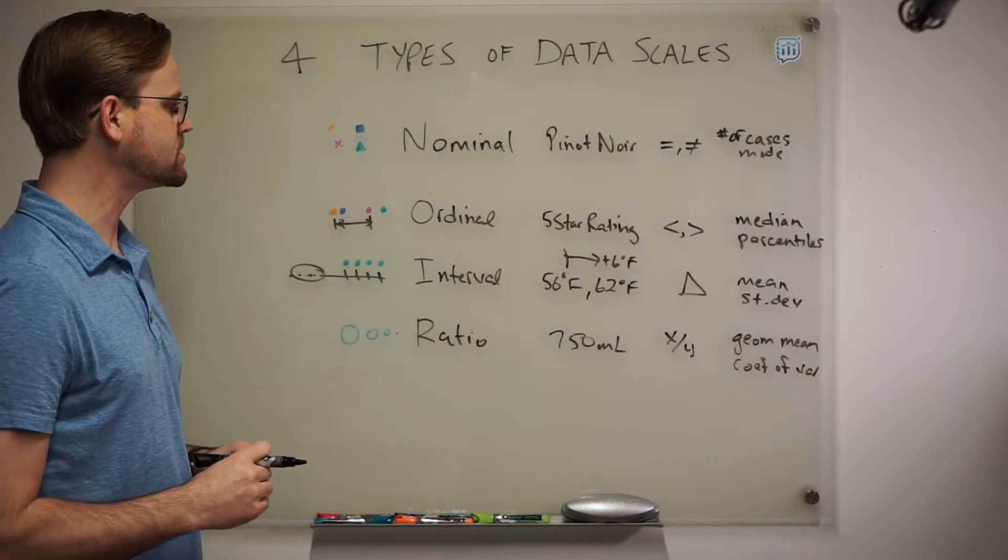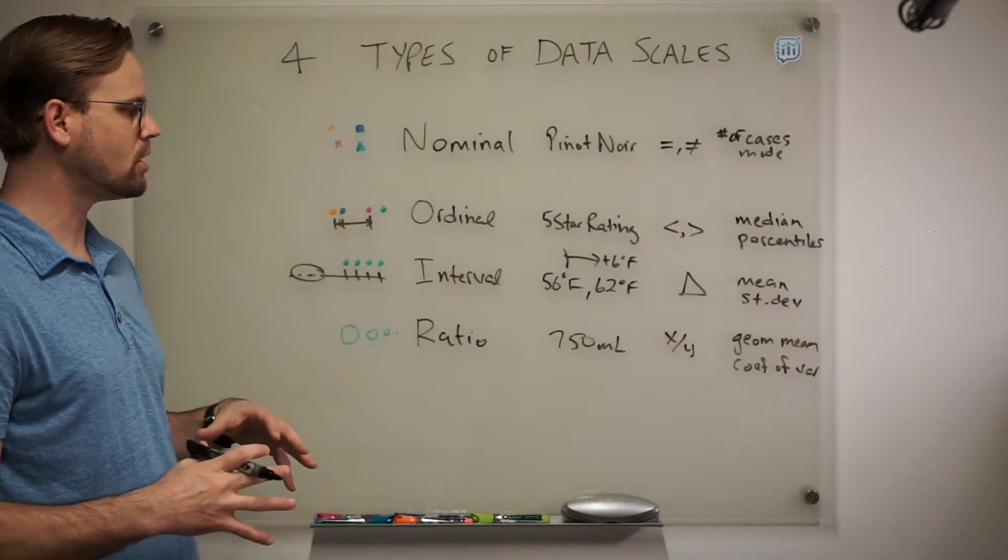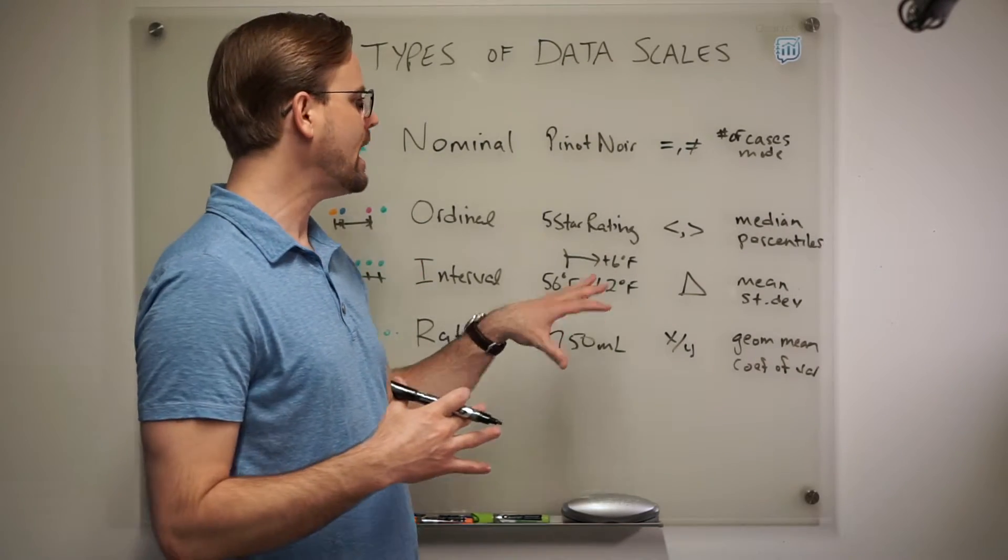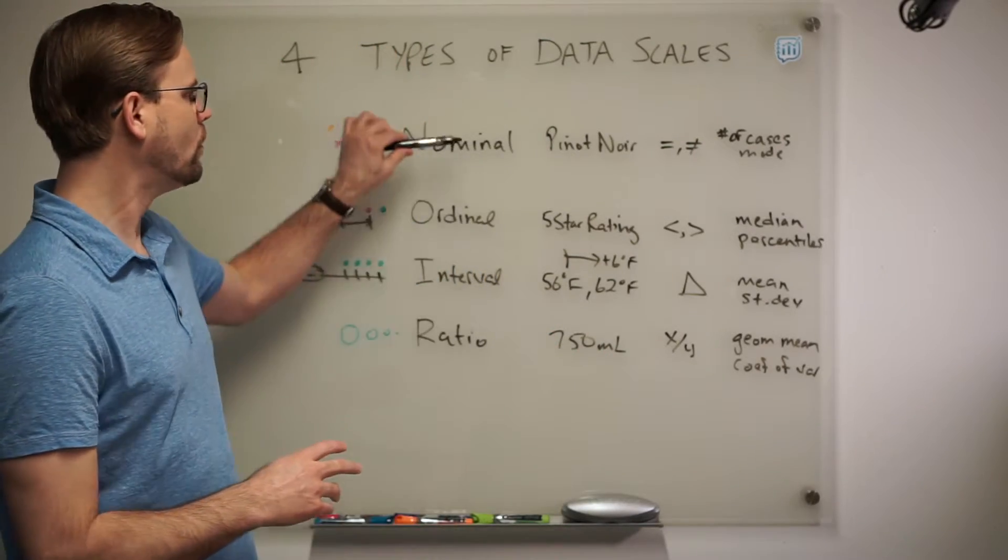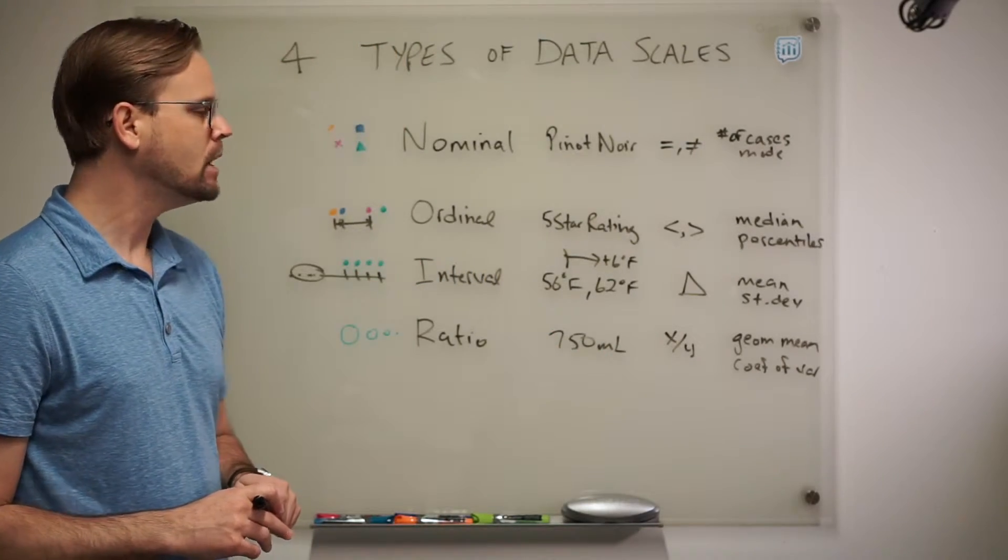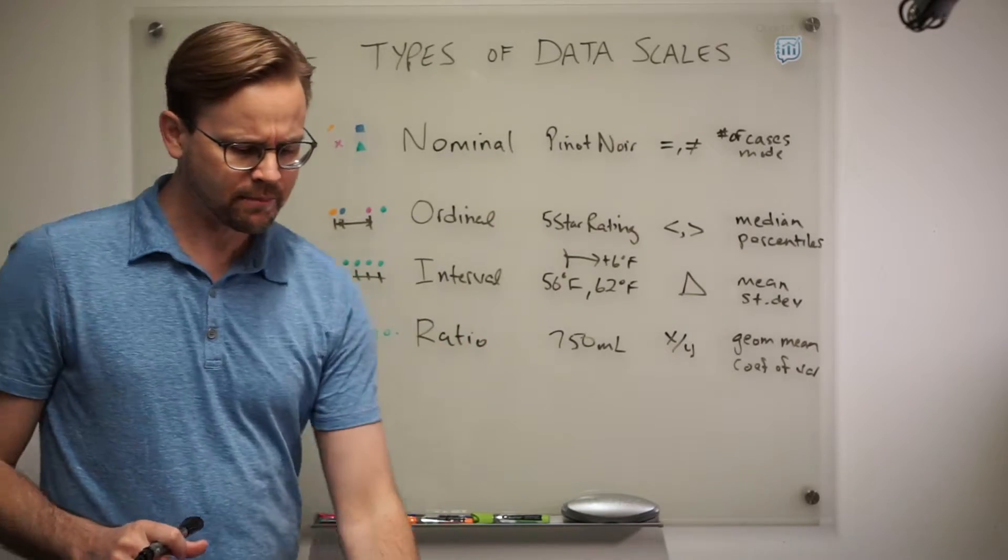All right. So there we go. There's our four data scale types. Really helpful to understand this. Also, when we're working with data to know at any given time, what a variable or an attribute that we're working with, what data scale type it falls into. But we want to be careful with this scale type.